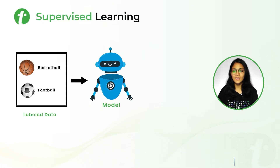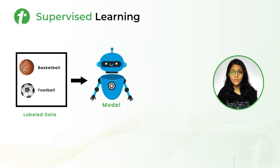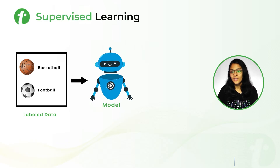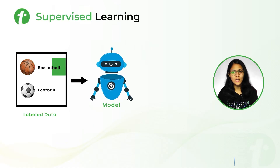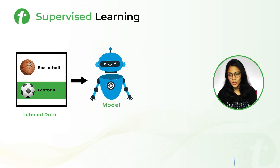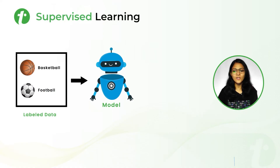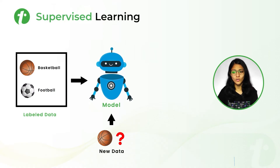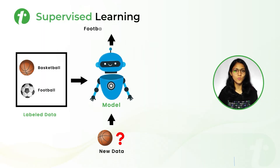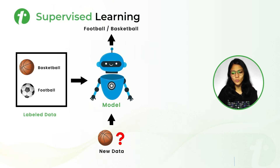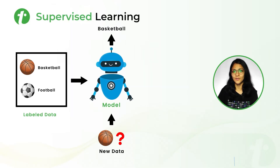Let's say this guy is our model and we are providing some labelled data to this model. That means we are telling the model that this kind of ball is basketball and this kind of ball is football. After training, when we provide some new ball to the model, it will predict whether it is a football or a basketball. In this case, the model is predicting that the new ball is a basketball.